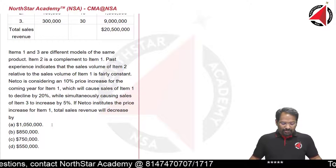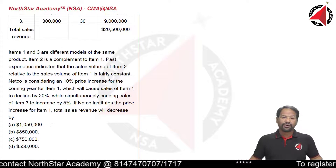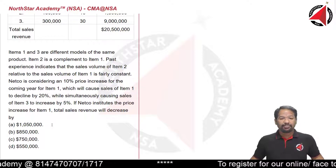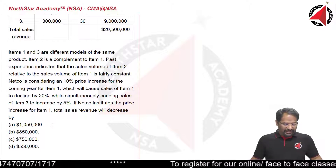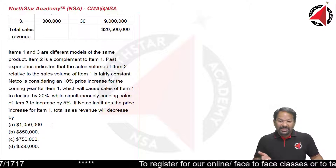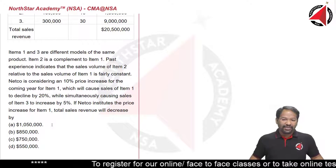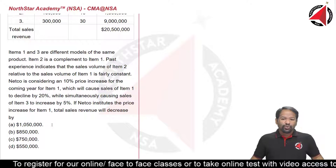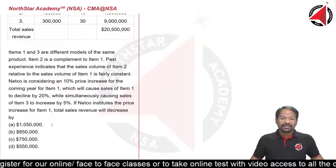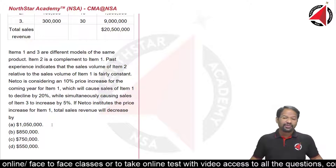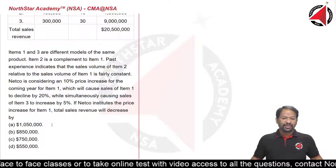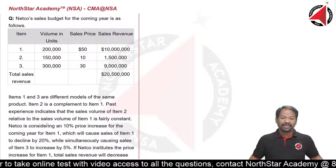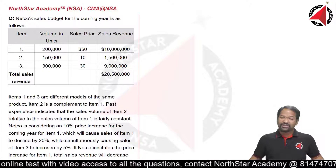Netco is considering a 10% price increase for the coming year for Item 1, which will cause sales of Item 1 to decline by 20%, while simultaneously causing sales of Item 3 to increase by 5%. If Netco institutes the price increase for Item 1, the total sales revenue will decrease by — so we need to find out what will be the total sales revenue decrease.